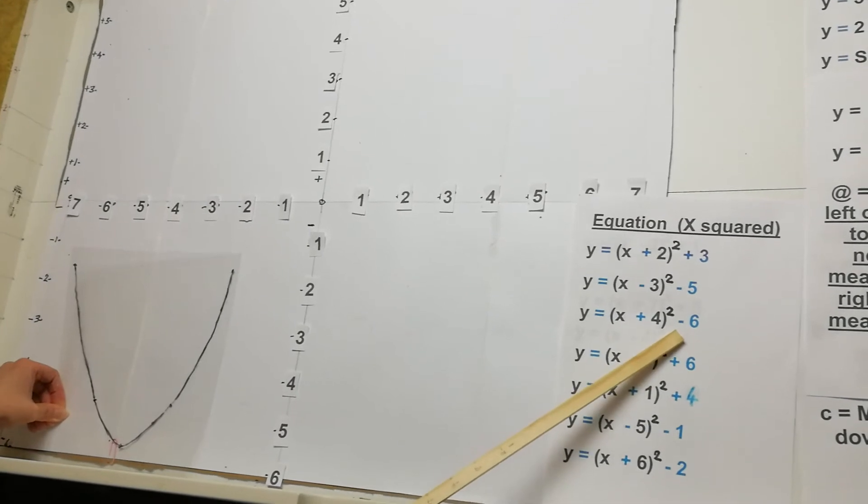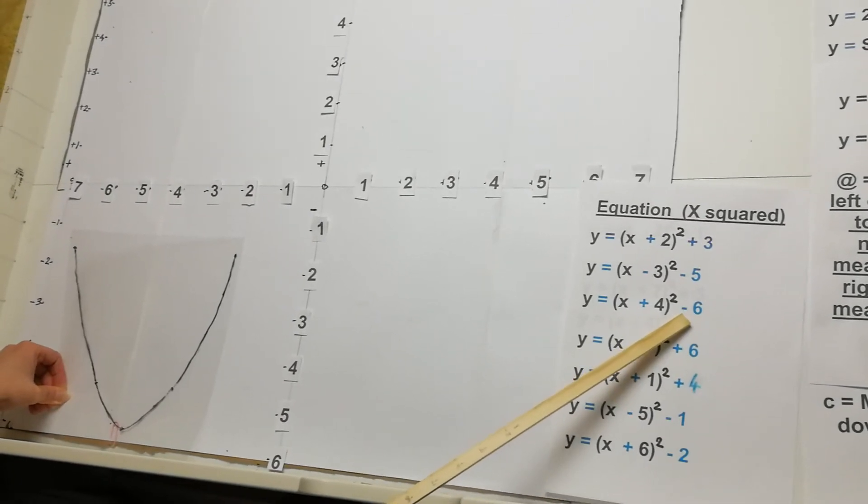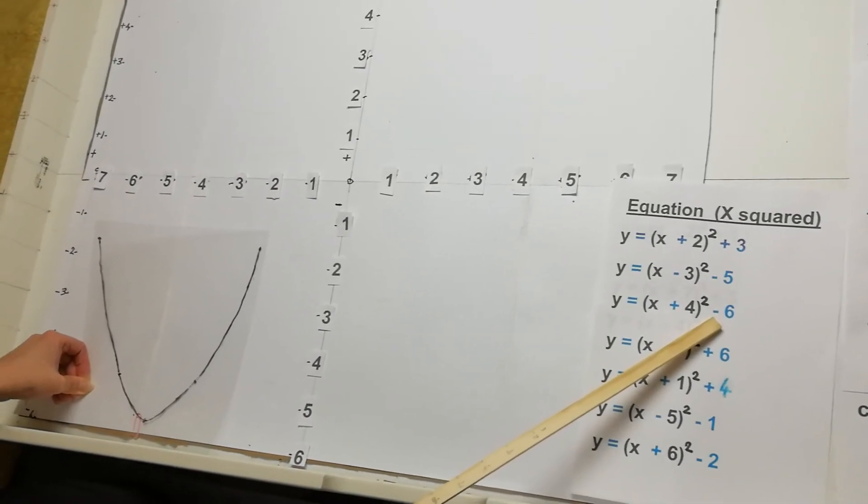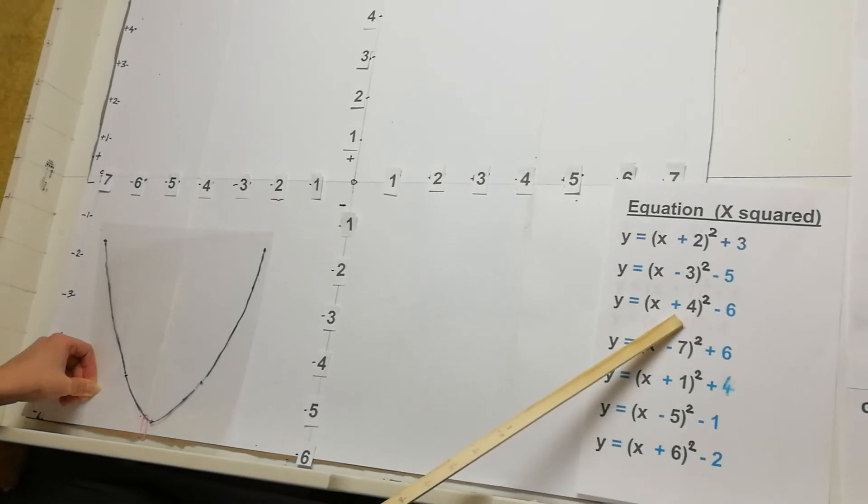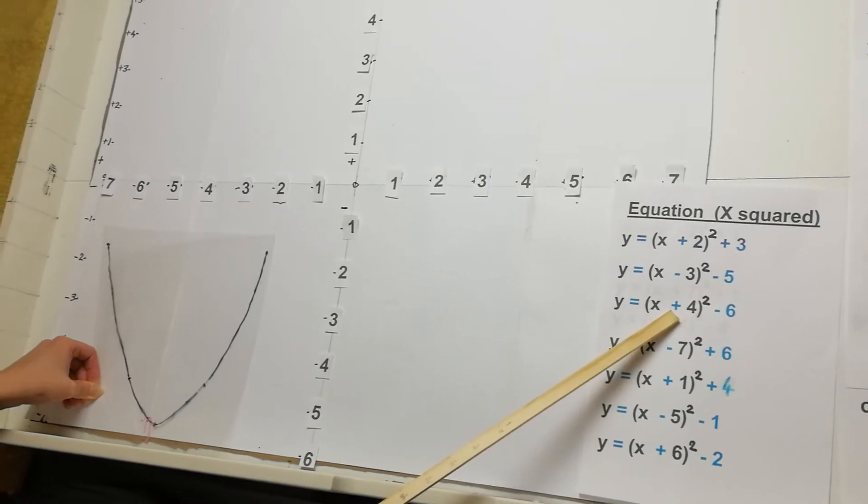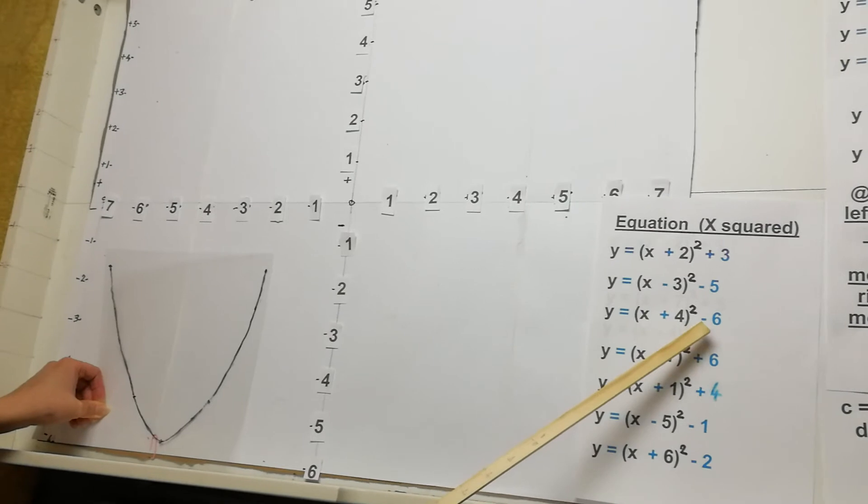So when it's outside, it moves up and down, but it's always just if it's plus, you move up. If it's minus, you move down. Whereas inside the brackets, it's always the opposite. So plus is to the left and minus is to the right.